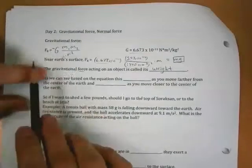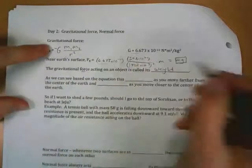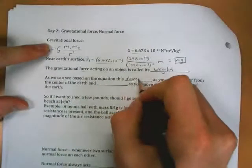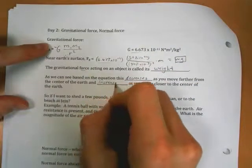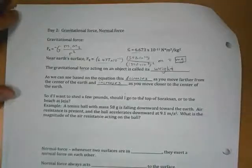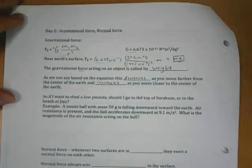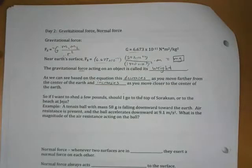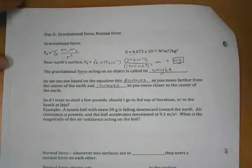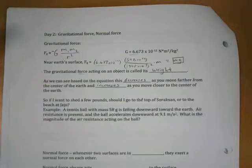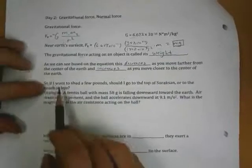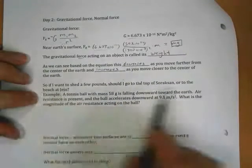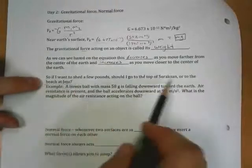As we can see, based on our gravitational force equation, the gravitational force decreases as you move farther from the center of the earth, and increases as you move closer to the center of the earth. So the gravitational force acting on you right now is less than it would be if you were out in space somewhere. That's not why it's zero g. Zero g is a bad name. There is still gravity. It's not zero. It's just that you're accelerating at the same rate as the box you're in. So I accidentally, I should have left space here. So if I want to shed a few pounds, should I go to the top of Seoraksan or the beach at Jeju?